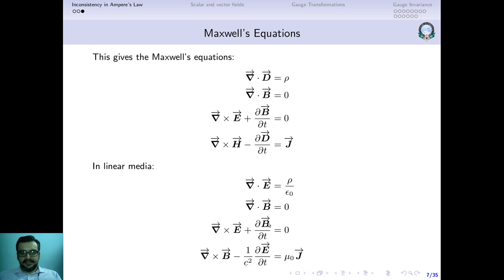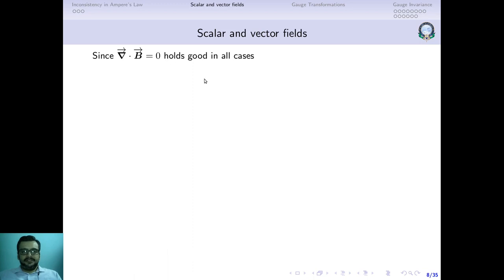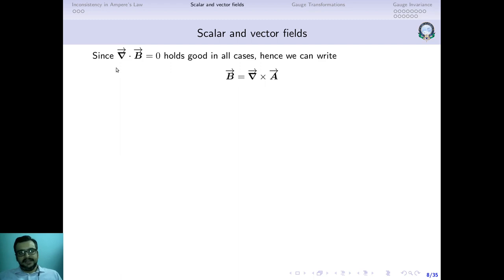Now let's get the notion of scalar and vector potentials from the homogeneous Maxwell's equations. The divergence of B is always zero — a fundamental property of matter, since isolated magnetic monopoles cannot exist. If divergence of B is zero, then B can be written as curl of A, because the divergence of the curl of any vector field is always zero. Writing B as curl of some vector field A ensures that divergence of B is automatically zero.